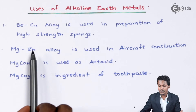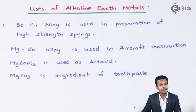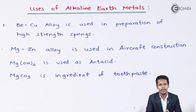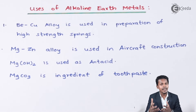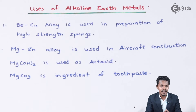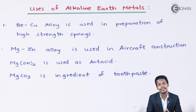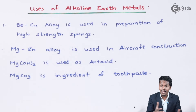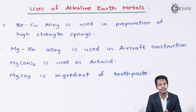The next point is that magnesium-zinc alloy is used in aircraft construction. Magnesium belongs to the S-block elements and is a very light metal. It can be combined with zinc, or with other p-block elements like aluminium, to form a very high-strength alloy. Aircraft need materials that are both lightweight and high-strength, which is why this alloy is used.